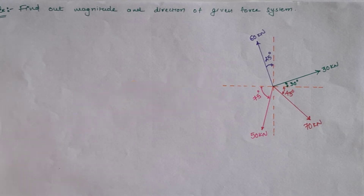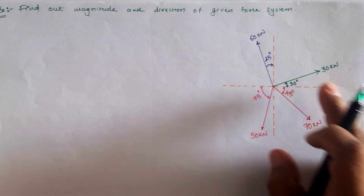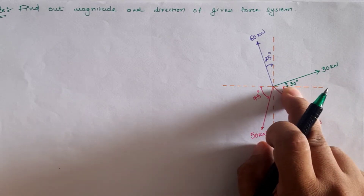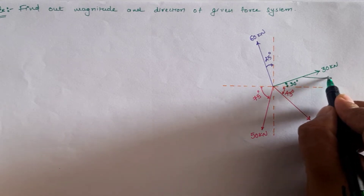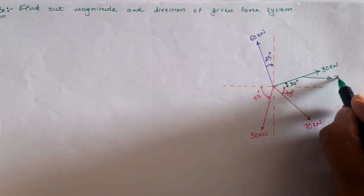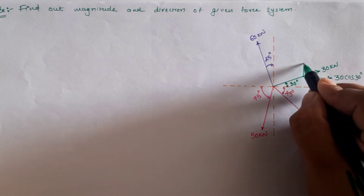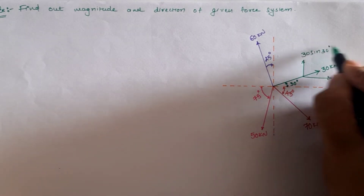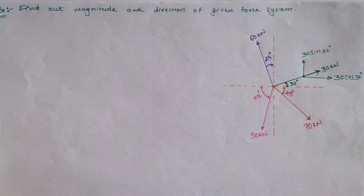First, if we resolve the 30 kilonewton load — it makes an angle of 30 degrees with the horizontal — the resolution in the x-direction is 30 cos 30, while the vertical component is 30 sin 30 in the outward direction.